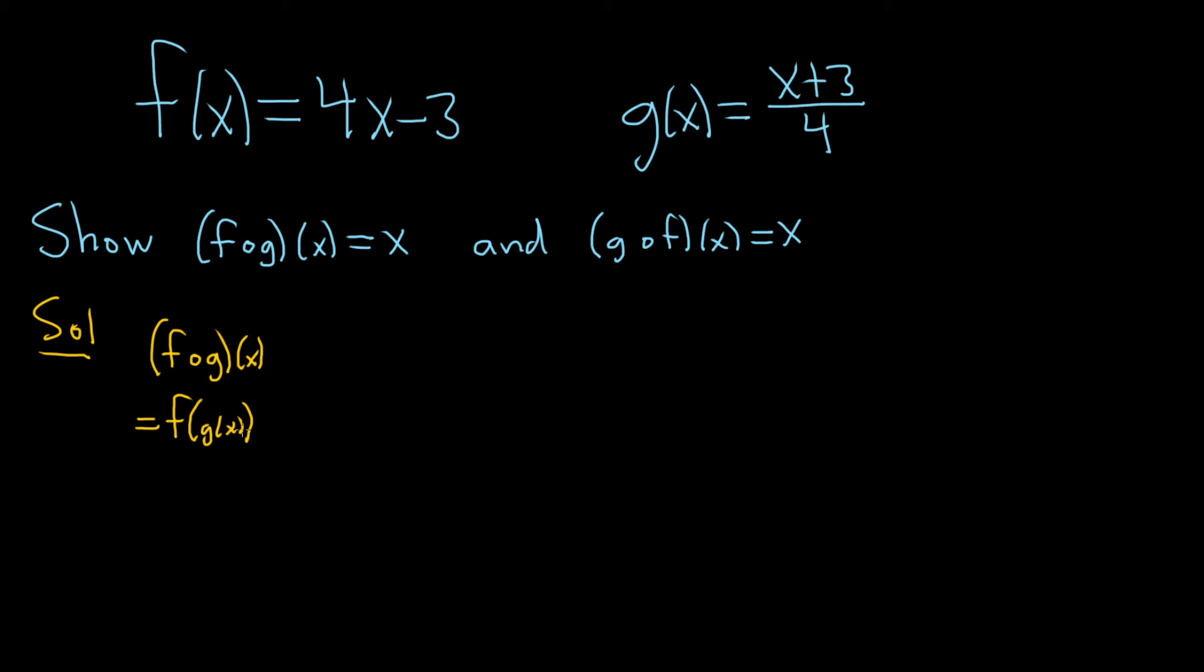So now you replace the inside piece. So this g of x here is actually over here, it's this function. So let's go ahead and replace that. So this is f of g of x which we know is x plus 3 all divided by 4. So that's our inside function g of x. Again you just replace it.